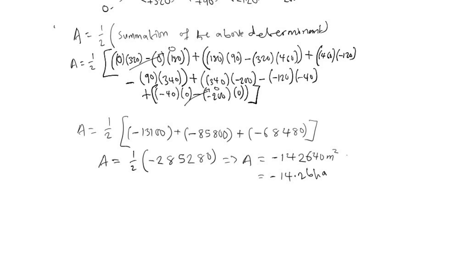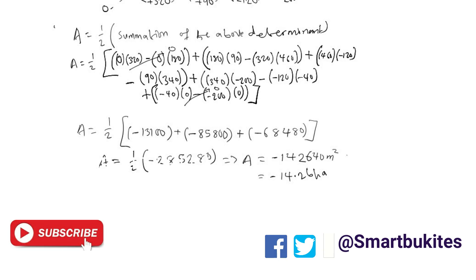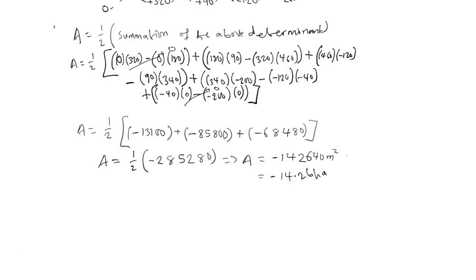The conversion factor from square meters to hectares is dividing by 10,000, so we get our value in hectares as 14.26 hectares. The negative sign is because we considered our traverse to be clockwise — that is why we have this negative sign. Thank you for watching. If you have any comments, you can put them in our comment section. See you later.